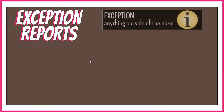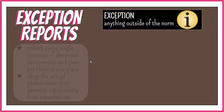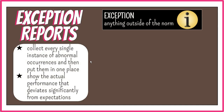The third common report created in MIS is the exception report. An exception is anything outside of the norm. It collects every single instance of these abnormal occurrences and puts them in one place where management has easy access to them. The purpose of this document is to show the actual performance that deviates significantly from expectations. It also allows management to see what's not going right and prioritize what needs to be solved immediately.